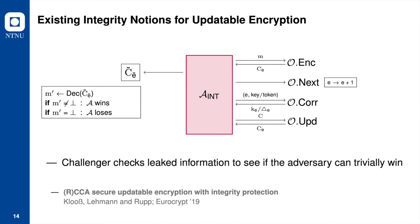Integrity notions for updatable encryption schemes have been studied in the work of Kluz et al. In the integrity game, an adversary attempts to provide a valid new ciphertext to the challenger. The challenger evaluates if it is new and decrypts to a valid message. If so, the adversary wins the integrity game. Note that if a trivial win condition was triggered, the adversary will always lose.